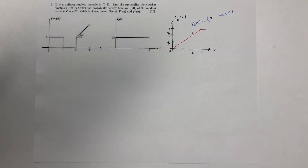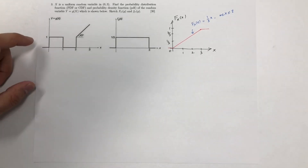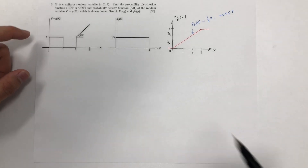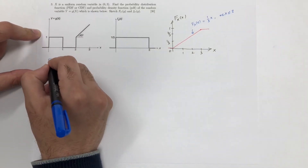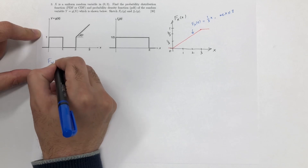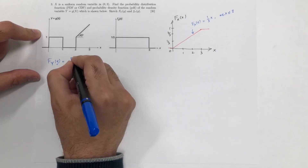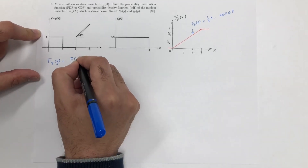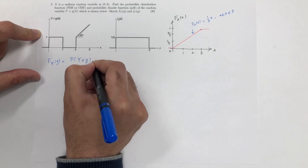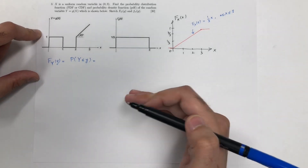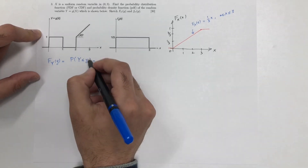Now what we're required to do is figure out the distribution function and density function for y and also plot them. Let's start with the distribution function of y, F_Y(y), which by definition is the probability that the random variable Y is less than or equal to small y, and we need to figure this out for every value of small y.